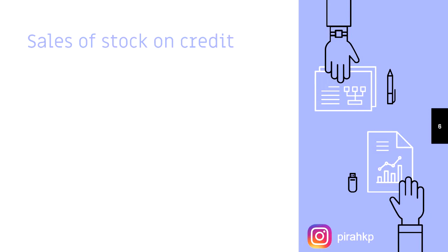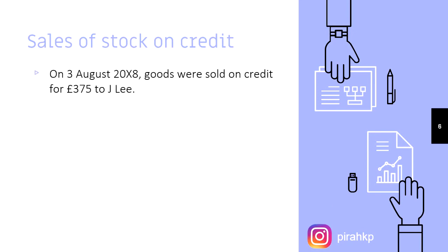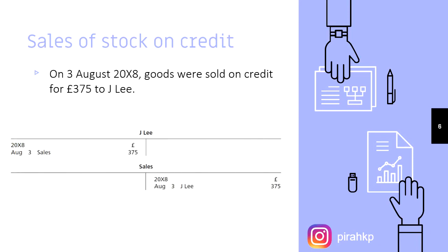Next transaction: sale of stock on credit. On 3rd August 2018, goods were sold on credit for £3.75 to J.A. Lee. Sales — sold on credit. Here what comes in is a receivable. J.A. Lee has said 'I will give you money later.' So J.A. Lee receivable is your debit, because that is your destination, and sales is your credit, because it is your source. Those ledger accounts: J.A. Lee receivable debit, sales credit — the goods are gone.